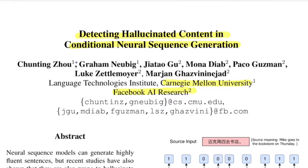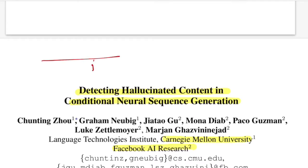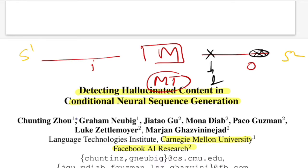This paper essentially focuses on automatically identifying and quantifying generated text that is not faithful to the input. For example, if you have an input I that goes to a system M and it generates an output sequence O — think of this as a machine translation setting where the source language is S1 and the target language is S2 — the paper targets finding the tokens or phrases which are hallucinated, labeling them as 1, and the rest as 0 (not hallucinated).